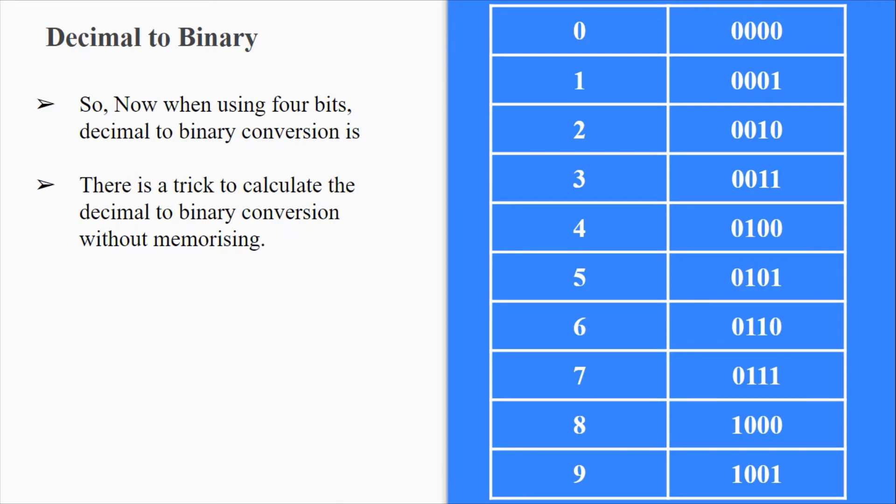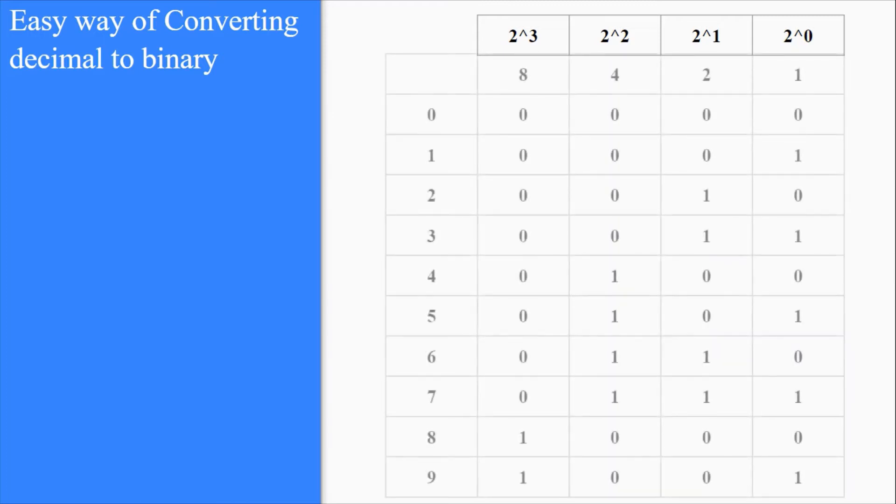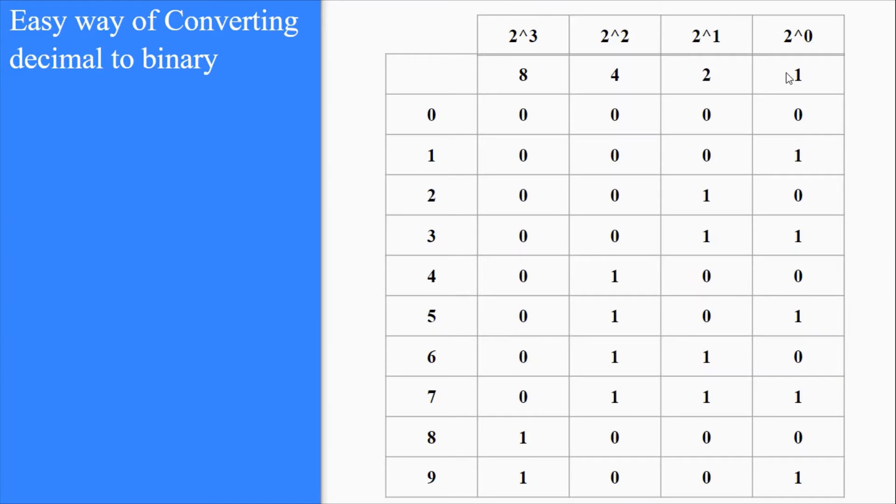So there is a trick to calculate the decimal to binary conversion without actually memorizing them. Like how you have place values in decimal systems like 1s, 10s, 100s, and 1000s, we have the same in the binary system which is in the powers of 2: 2 power 0, 2 power 1, 2 power 2, and 2 power 3. What is 2 power 0 is 1, 2 power 1 is 2, 2 power 2 is 4, and 2 power 3 is 8.